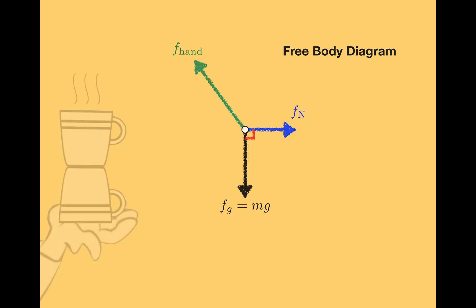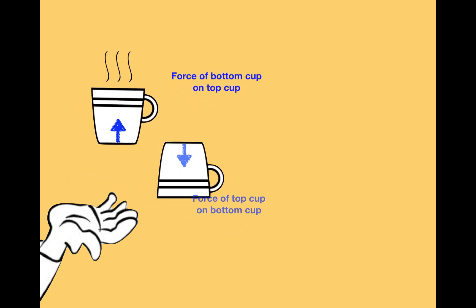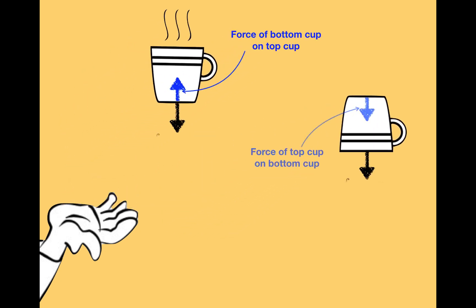If more than one object is accelerating or interesting in some way, then you'll have to have more than one free body diagram and you'll likely have to put Newton's third law into play. For example, here two cups have been stacked on top of each other and are being accelerated by the hand. In this case, if you wanted to find out something about the force that the bottom cup is exerting on the top cup, you'd have to also think about the force that the top cup is exerting on the bottom cup. I'm not going to go through all of the details, but here are the free body diagrams for the two cups in this case.